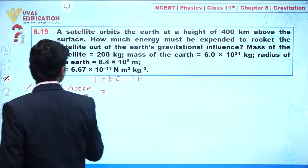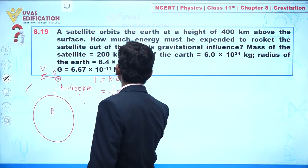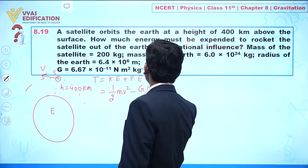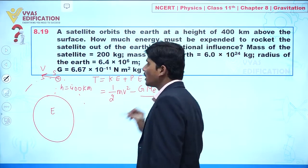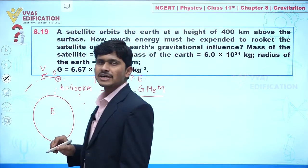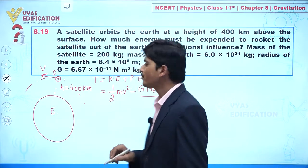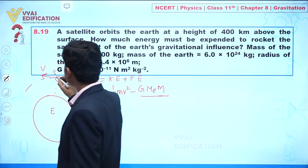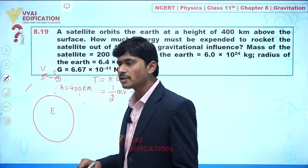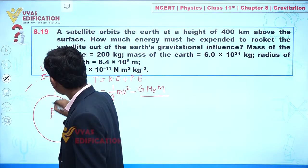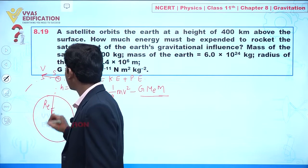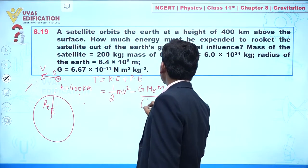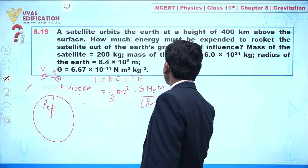Kinetic energy is given by half m·v², and potential energy is minus G·Me·m divided by the total distance from the center of Earth. The distance from the center of Earth to the satellite is Re plus h, so I write it as Re plus h.